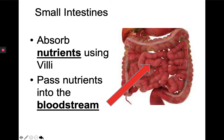The next step of the digestive system is the small intestines. The small intestines are 22 to 23 feet long and this is where most of the nutrients of the food that you've eaten get absorbed. The intestines —